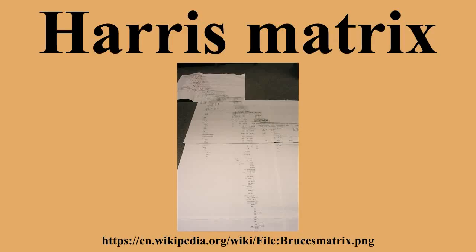The Harris matrix is a tool used to depict the temporal succession of archaeological contexts, and thus the sequence of depositions and surfaces on a dry land archaeological site, otherwise called a stratigraphic sequence. The matrix reflects the relative position and stratigraphic contexts of observable stratigraphic units or contexts.